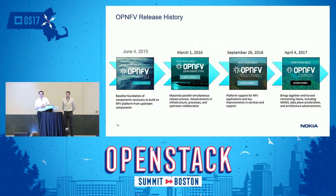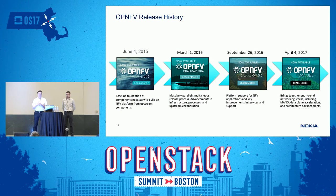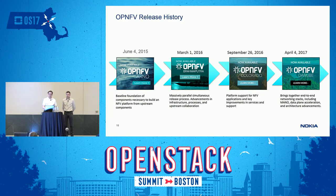Here you can see the OPNFV release history. Arno was the first OPNFV release, coming out a little less than two years ago — it was the baseline foundation of components necessary to build an NFV platform from upstream components. During 2016, Brahmaputra and Colorado were released. The latest OPNFV release, Danube, brings together end-to-end networking stacks including management and orchestration, data plane acceleration, and architecture advancements.